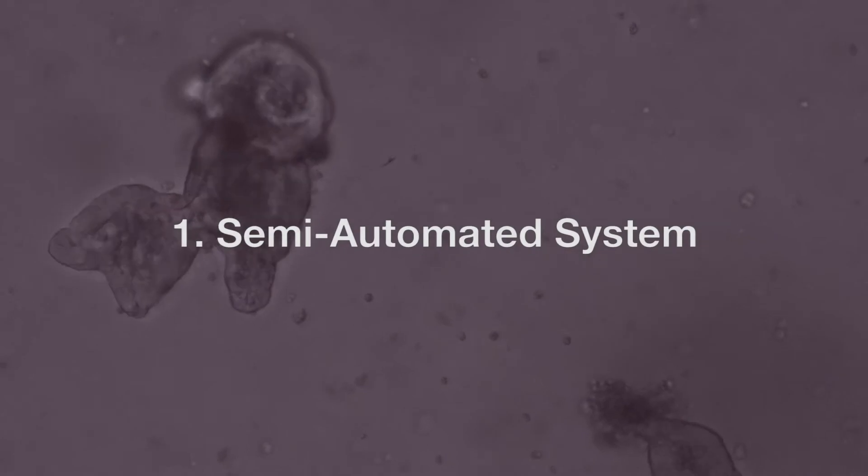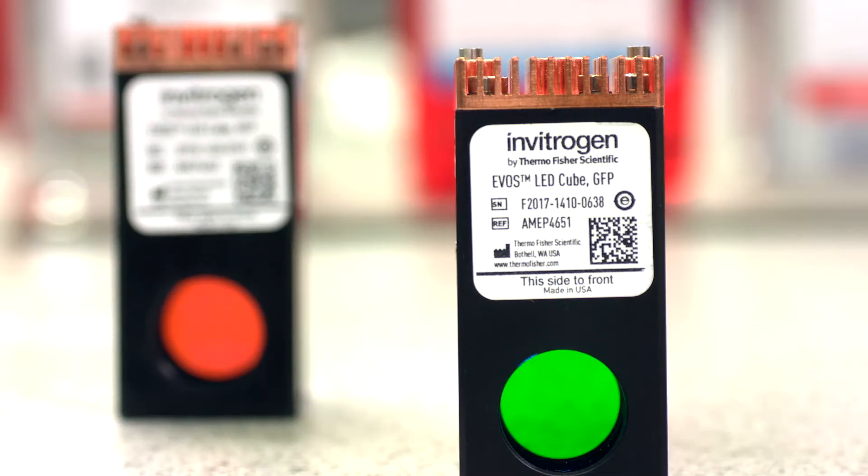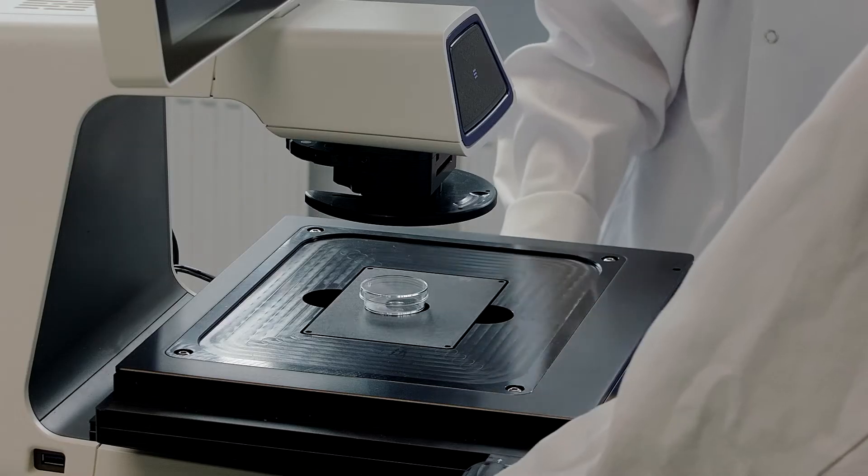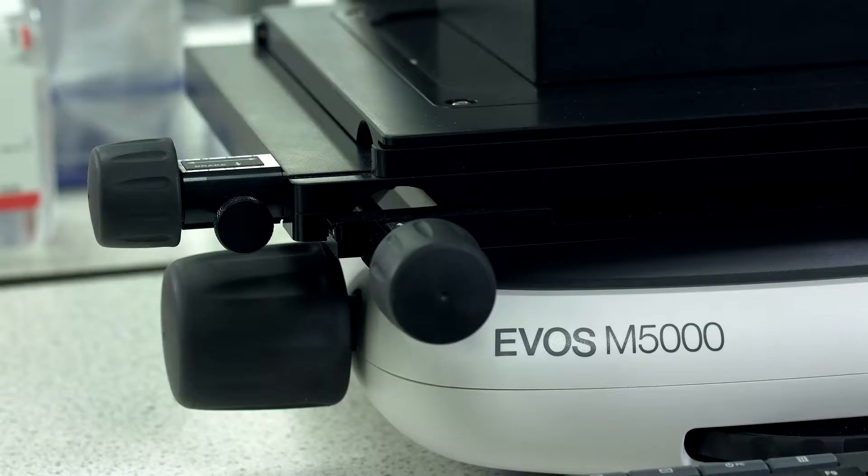It's a semi-automatic system so you can, for example, choose different filter cubes that you want to have imaged and just press start and it will do the job for you. You don't have to intervene with it anymore, which is great because otherwise every time you touch the microscope there's a danger of you moving your cells around.